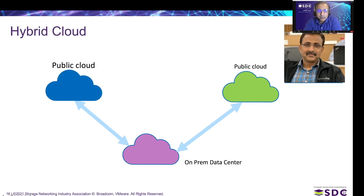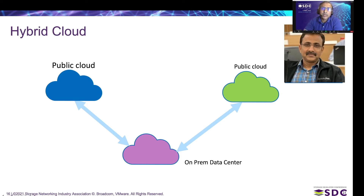Many customers prefer to use public cloud — possibly multiple public clouds — and an on-prem data center. Hybrid cloud is basically the ability to use multiple clouds and an on-prem data center, either Colo or on-prem. There are many solutions out there including from cloud vendors like AWS Outpost, Anthos, and Azure Stack. VMware also has a solution called Tanzu, based on Kubernetes, and I'll let Naveen discuss more about that.